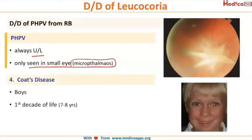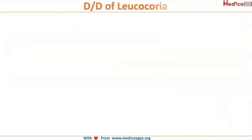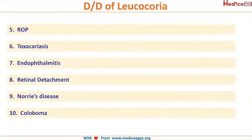The next condition causing leukochoria is Coats disease. Coats disease is seen in boys in their first decade of life. As you can see in this image, this boy has Coats disease. A memory aid: boys wear coats — that's how you can remember it.